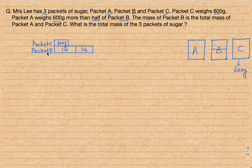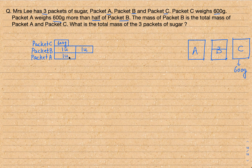Now how about packet A? We know that packet A weighs 600 more than half of packet B. Packet B is two units, so half of two is one unit. So packet A is definitely one unit plus another 600 grams, which we can represent like this — one unit block and then 600 grams.